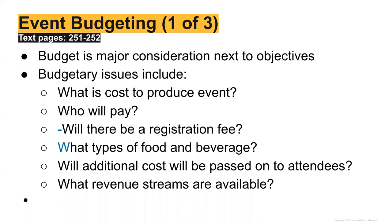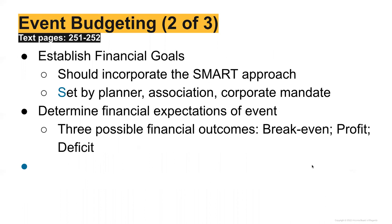The revenue streams include various sources. You want to establish your financial goals using a SMART approach. For example: we would like to increase external sponsorships by 30% for this year, or we would like to bring in 100 new attendees from the Southeast region of the United States. These goals should be set by the planner, your association, or a corporate mandate. Setting those goals will help you establish how you're going to achieve them.